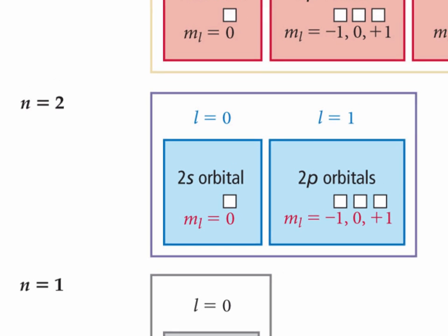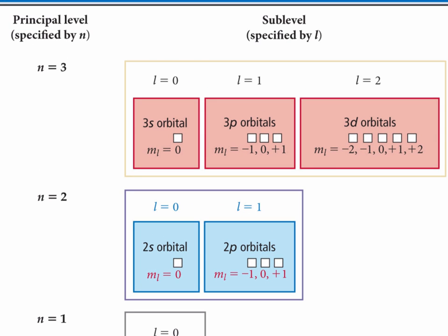When N equals 3, we add the D subshell, which has five orbitals. So the third shell holds a total of 9 orbitals, or 18 electrons.